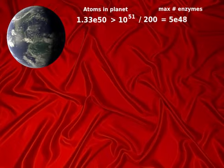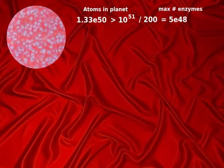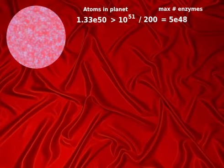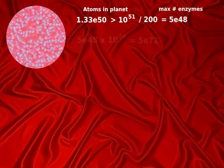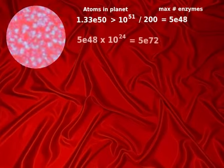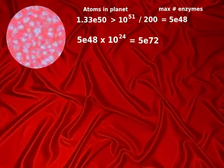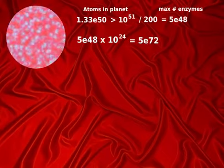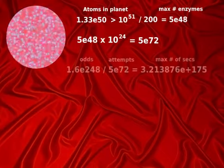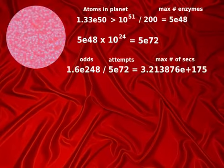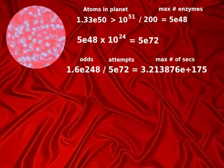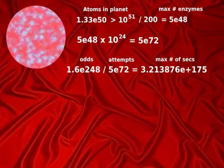Now we will assume every second this number of proteins are formed on every planet. But how long will it take to make a functional enzyme? Remember each planet is nothing but a pool of amino acids. We will multiply 5 times 10 to the 48th power by the number of planets in the known universe to see how many attempts total are being made. Then we divide the odds by our new number. This gives us the maximum number of seconds it will take to exhaust all the possible combinations.